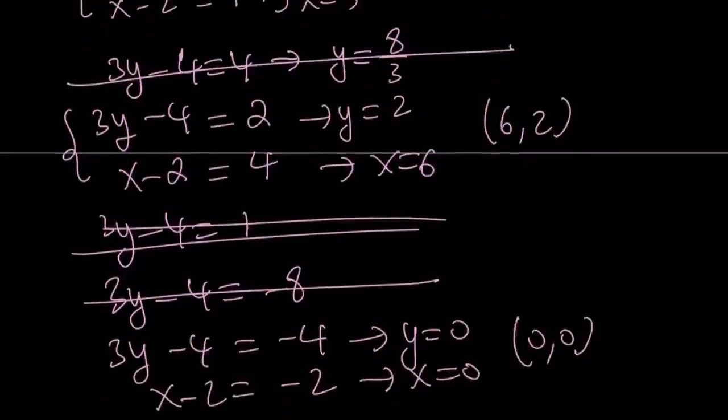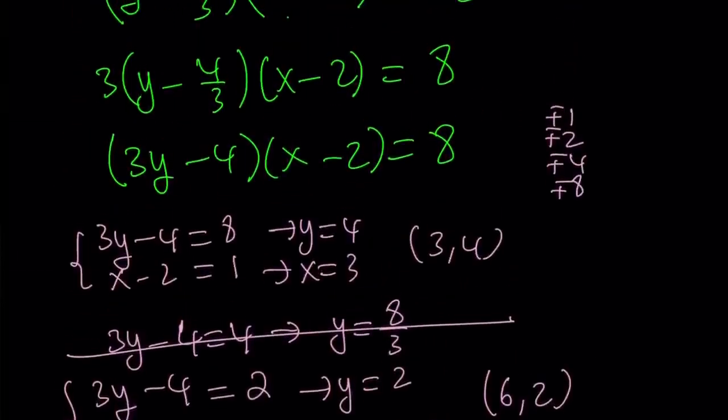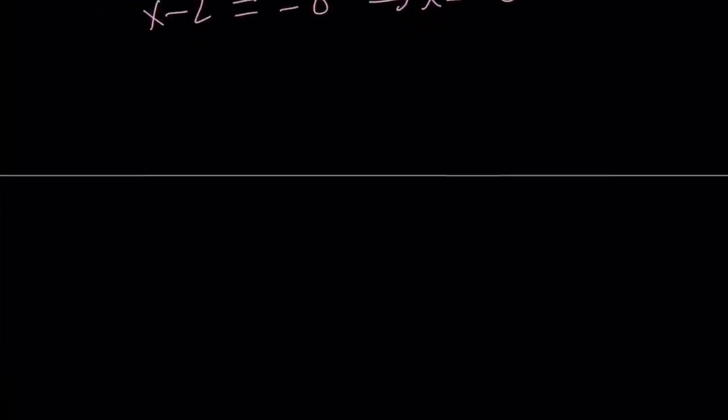And there are no other solutions because we considered all cases where 8 can be factored into. So let's go ahead and put this all together. And we're just going to wrap it up. So our solution set is going to be made up of negative 6 comma 1, 0 comma 0, 3 comma 4, and 6 comma 2. So that's pretty much going to be all the solutions. There are three solutions. They're all integers.